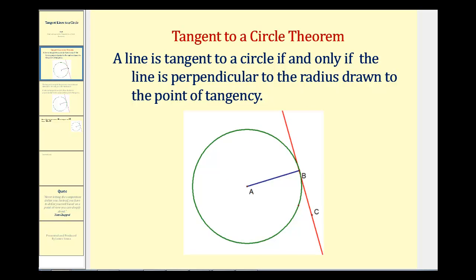The tangent to a circle theorem states a line is tangent to a circle if and only if the line is perpendicular to the radius drawn to the point of tangency.